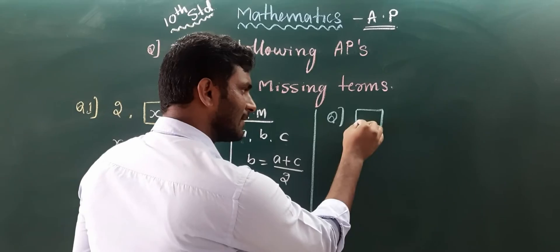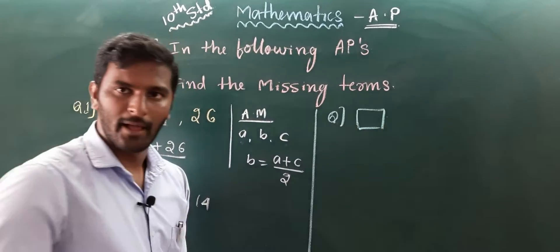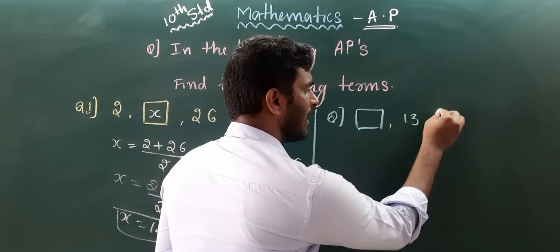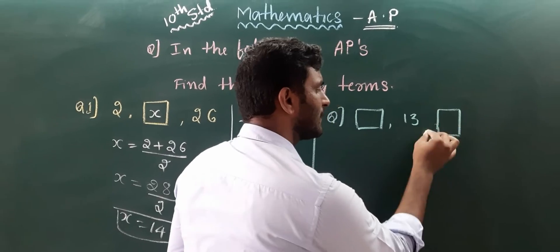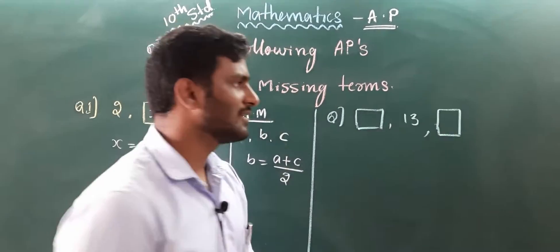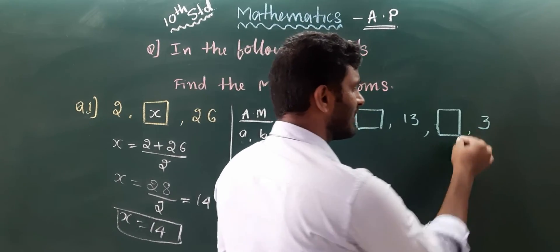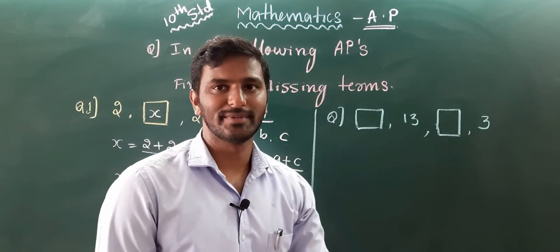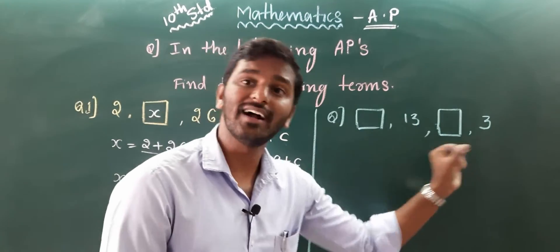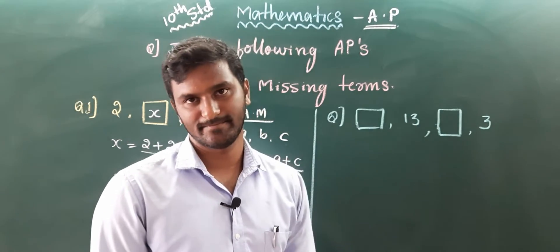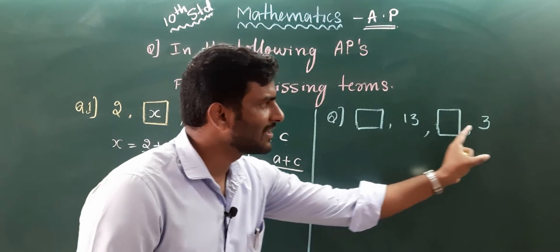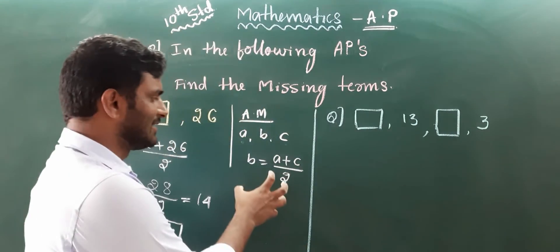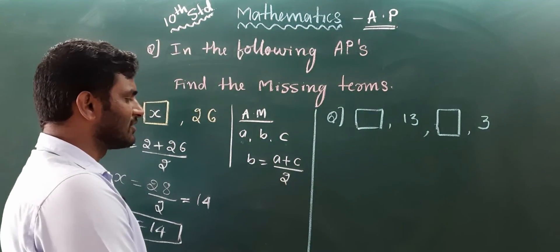In the next question, the first number is missing, the second number is 13, the third number is missing, and the fourth number is 3. So the first and third terms are missing, while the second and fourth terms are known.